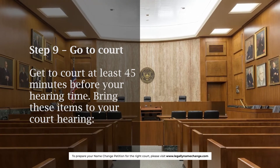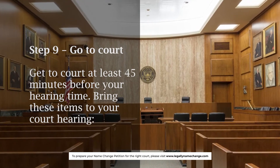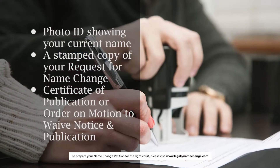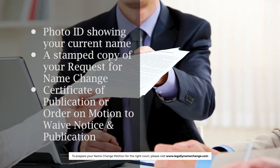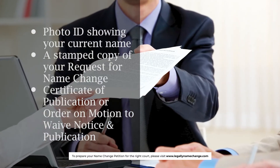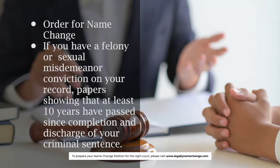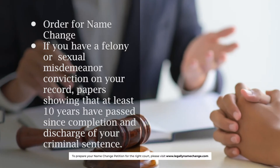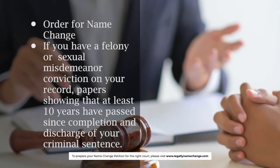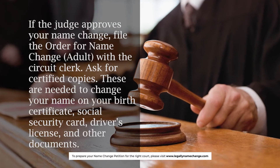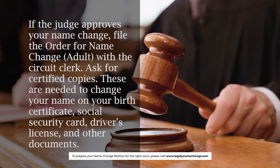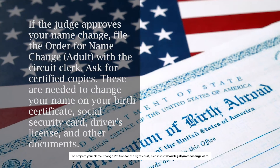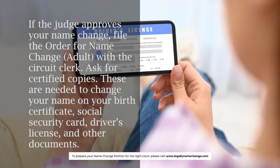Step 9: Go to court. Get to court at least 45 minutes before your hearing time. Bring these items: a photo ID showing your current name, a stamped copy of your Request for Name Change, a Certificate of Publication or Order on Motion to Waive Notice and Publication, and the Order for Name Change. If you have a felony or sexual misdemeanor conviction, bring papers showing at least 10 years have passed since completion and discharge of your criminal sentence. If the judge approves your name change, file the Order for Name Change (adult) with the circuit clerk and ask for certified copies.